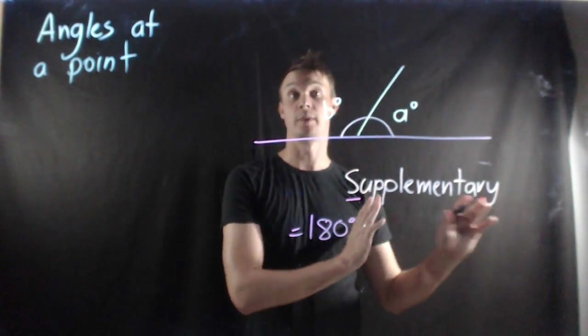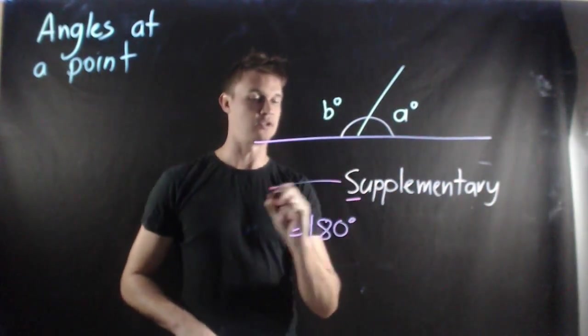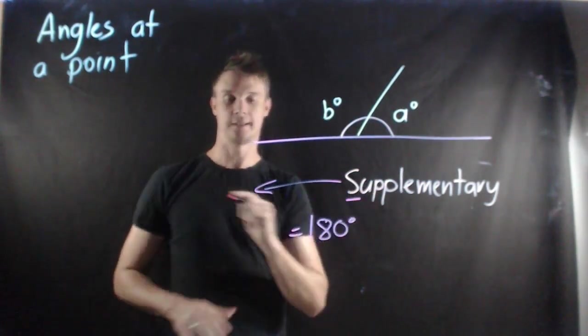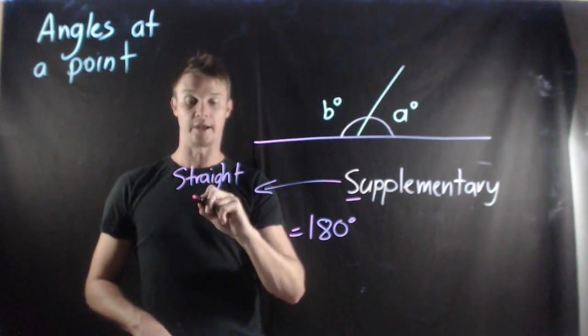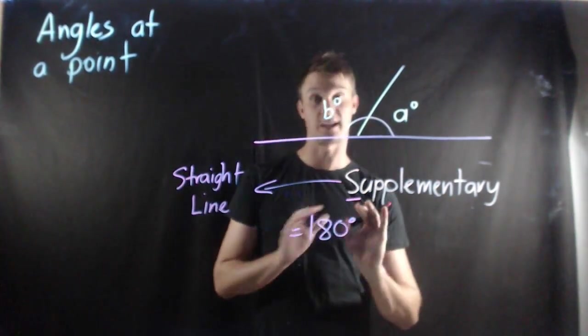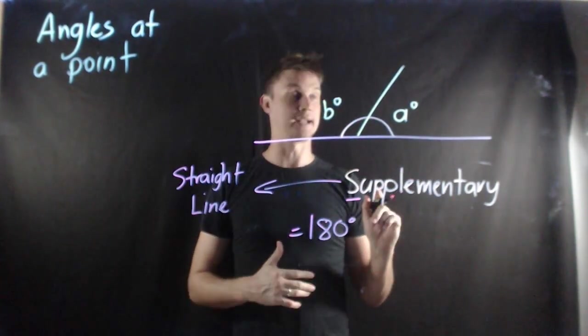Now the trick we use with complementary is that C meant corner so that meant 90 degrees. The trick you can use for supplementary is that S means straight line. We know that a straight line equals 180. So if you think of supplementary starts with S, the straight line, the angle needs to add up to 180 degrees.